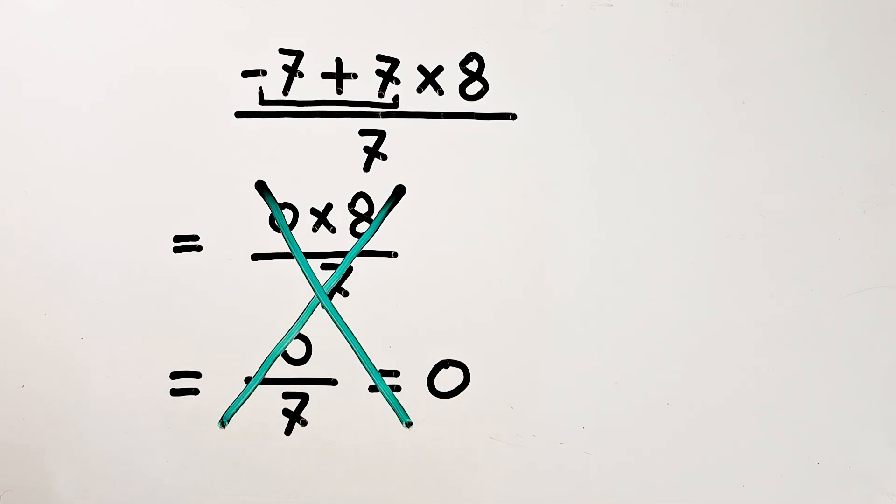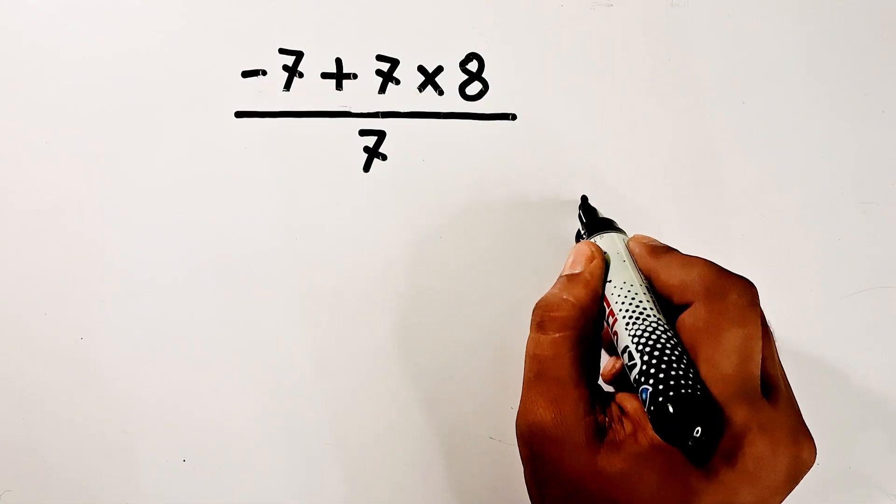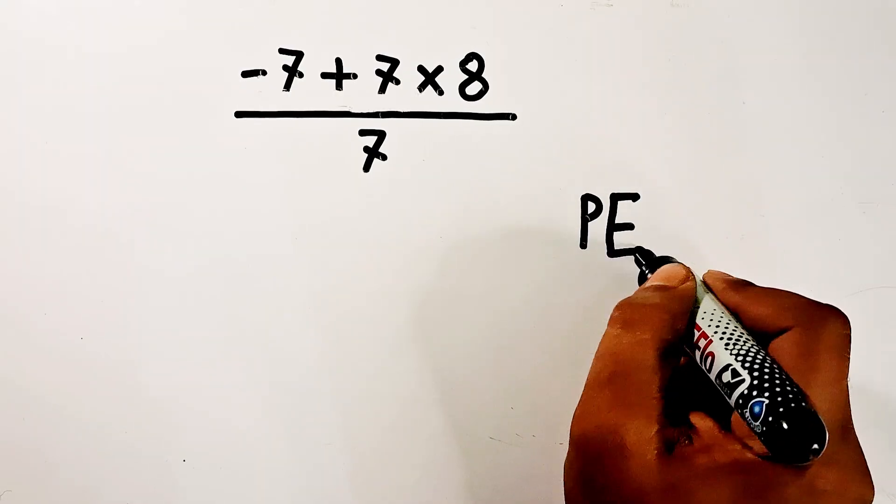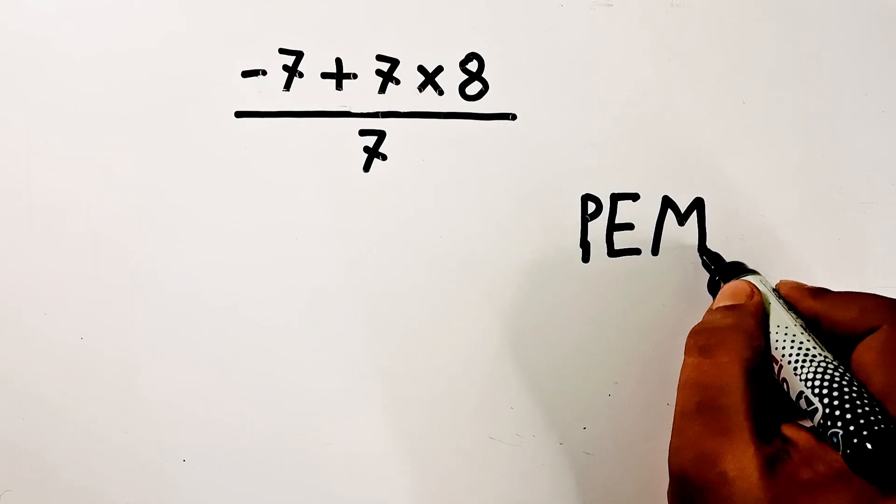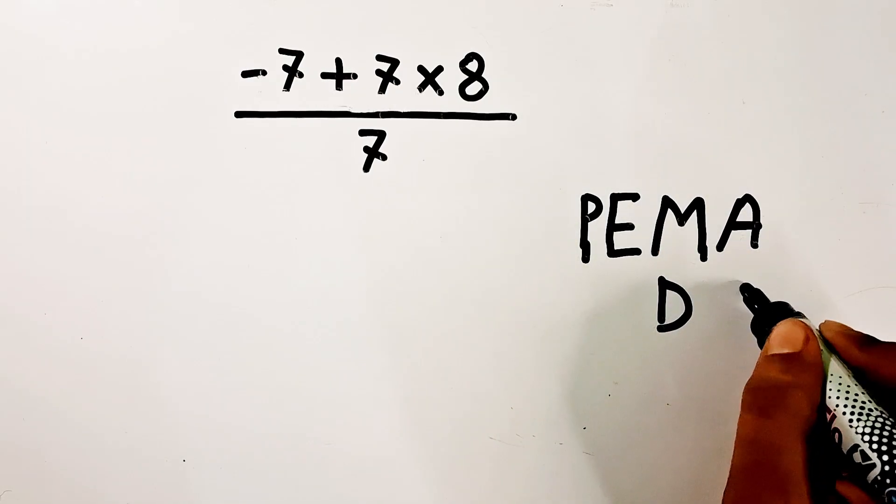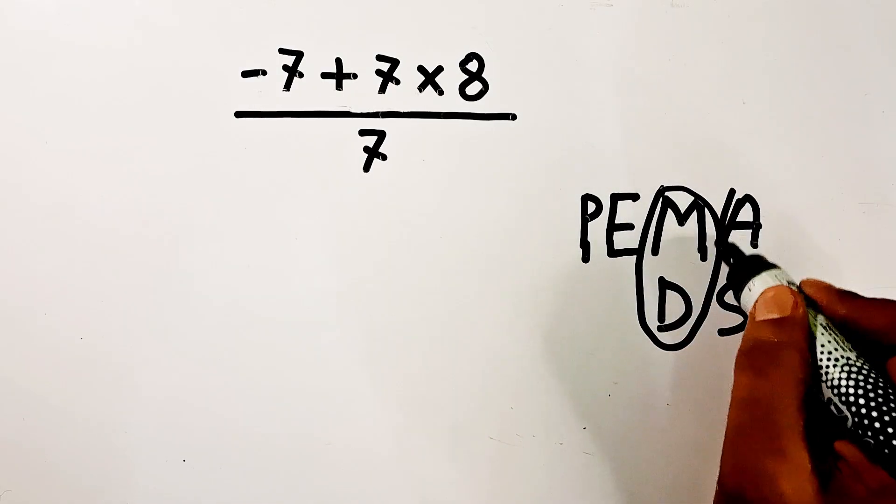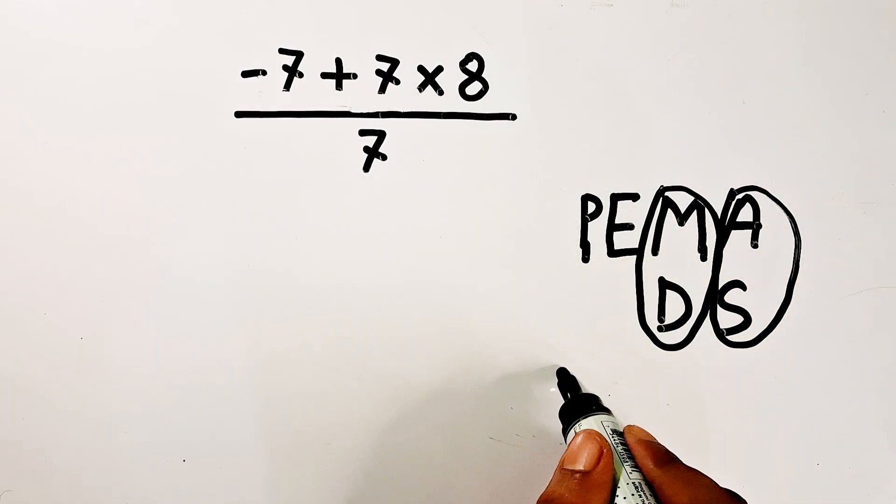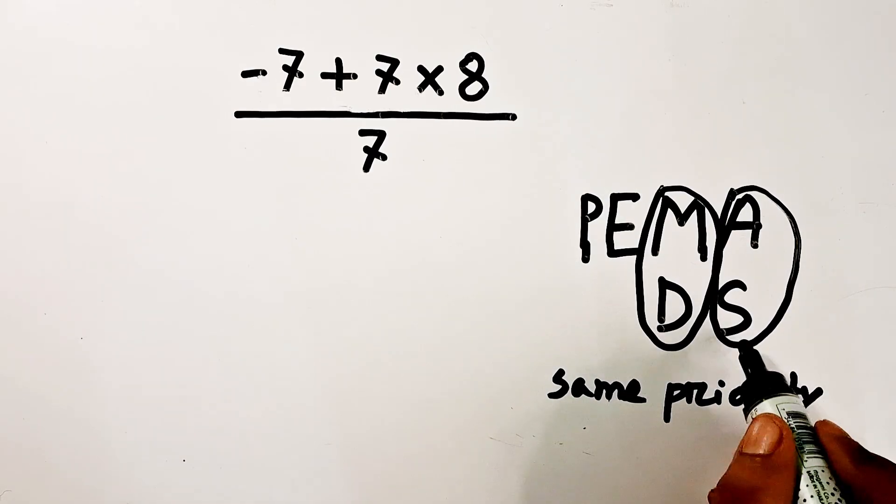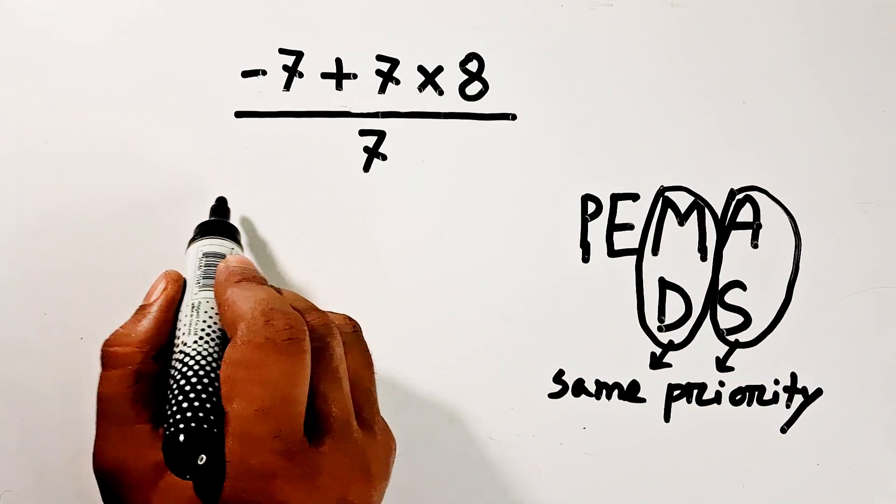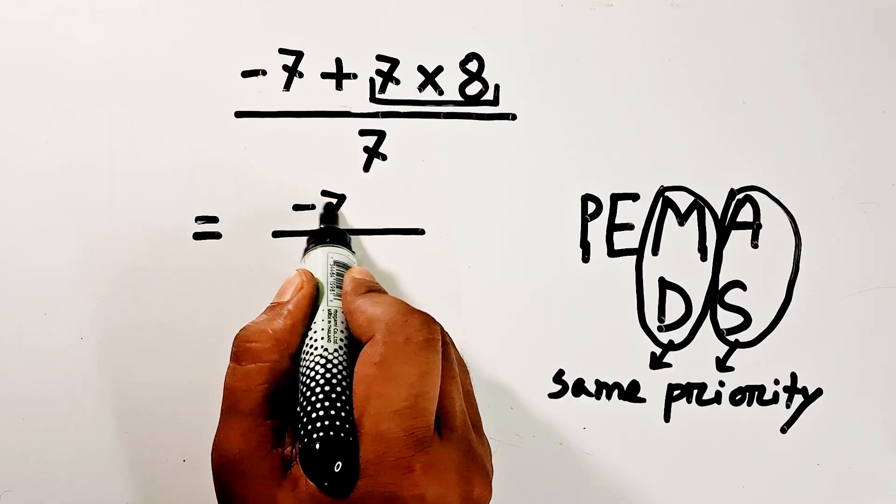According to the PEMDAS rule, P equals parenthesis, E equals exponent, M equals multiplication, D equals division, A equals addition, and S equals subtraction. Multiplication and division have same priority. Addition and subtraction also have same priority. That means left to right of the expression, whatever comes first you should do first.